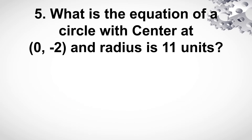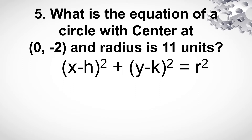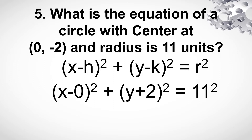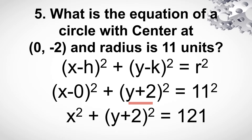Number 5. What is the equation of a circle with center at (0, -2) and the radius is 11 units? So gamit yung formula natin, substitute yung h nyo — 0 — yung k nyo — negative 2. So magiging x minus 0 squared plus y minus minus 2 — so magiging y plus 2 — squared is equal to 11 squared. So yung equation ng circle natin ay ito.